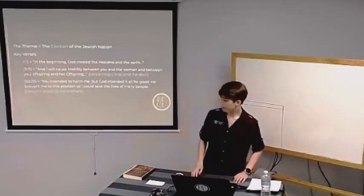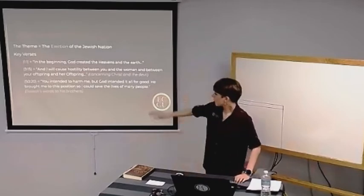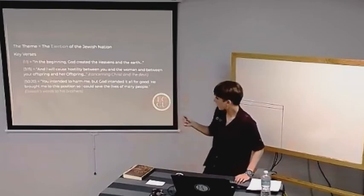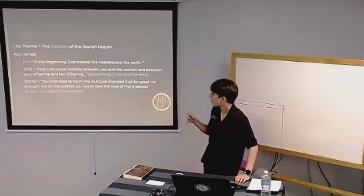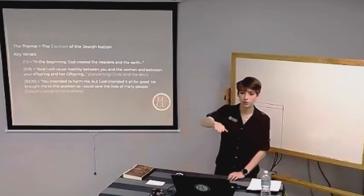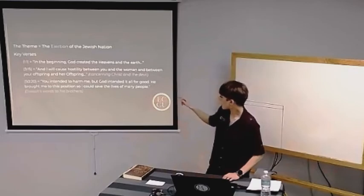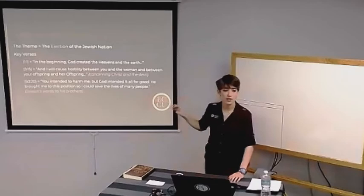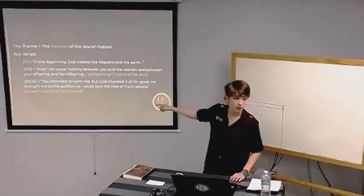When you look at what Genesis is about, the main theme is the election of the Jewish nation, of God calling these people up and beginning to set them apart as his chosen people. The key verses that stand out in Genesis: Genesis 1:1, 'In the beginning, God created the heavens and the earth.' Genesis 3:15, 'And I will cause hostility between you and the woman and between your offspring and her offspring.' This was Jesus, this was God speaking, and it was concerning what would happen between Christ and the devil, already studying from the very beginning this war that would ensue, but also showing who would be the victor. And finally, we have Genesis 50:20, which says, 'You intended to harm me, but God intended it all for good. He brought me to this position so I could save the lives of many people.' These were Joseph's words to his brothers at the end of Genesis. And these were going to ring very true because if they could believe that, that God could redeem any circumstance for good, then he wasn't done with their situation yet.